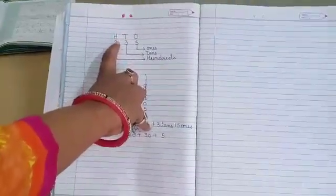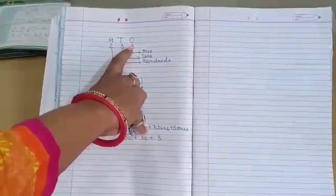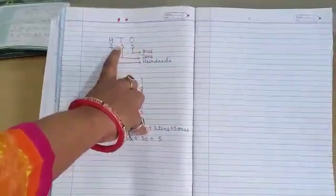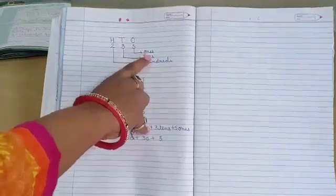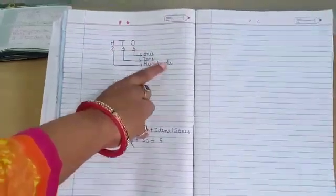In that, I have written 235. The place value of 5 is 1s, place value of 3 is 10s, and place value of 2 is 100s.